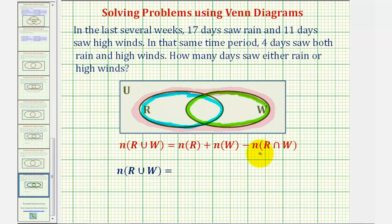R and set W, which would be the number of elements in this region here. Now the reason we have to subtract this out is because notice how we counted these elements twice, once in R and once in W, and therefore to find the number of elements in the union, we do have to subtract this intersection.